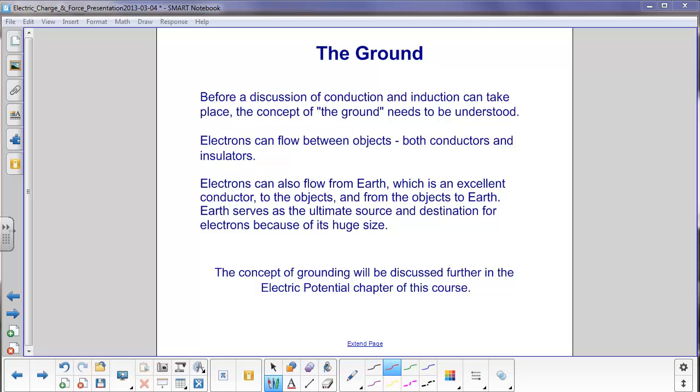They can also flow from the earth, which is an excellent conductor, to the objects and from the objects to the earth. Earth serves as the ultimate source and destination for electrons because of its huge size.